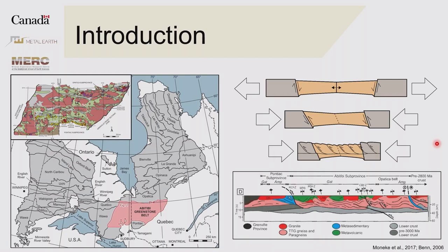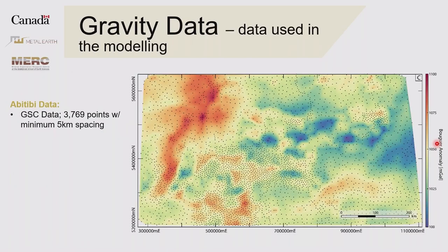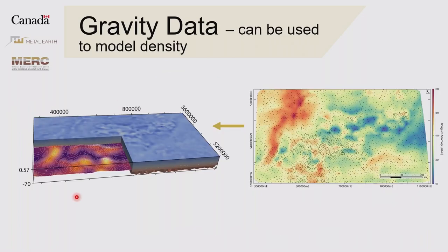We use gravity data — this is the gravity data set from the GSC. The density of the data points varied quite a bit, so there was really dense data around Chippegamu and Blake River. We thinned it so that it's about minimum five kilometers spacing, making it more uniform. Then we used an inversion modeling program to turn this into a density model of the Abitibi. Much like the moho is a velocity interface in seismic models, it's also a density interface in density models, so by extracting an isolayer from the 3D density model you can get this moho surface.